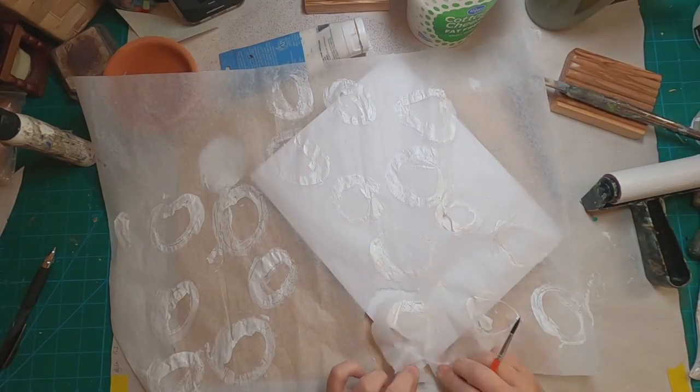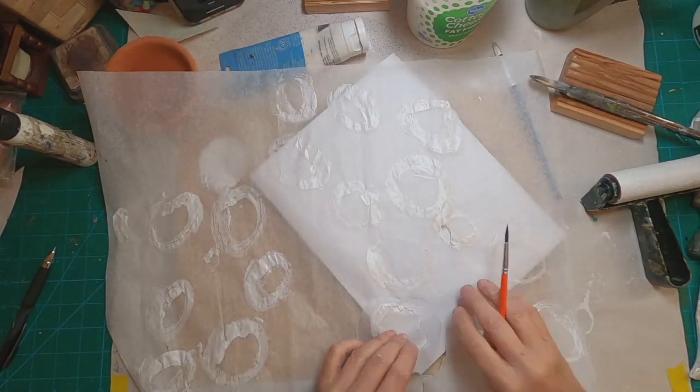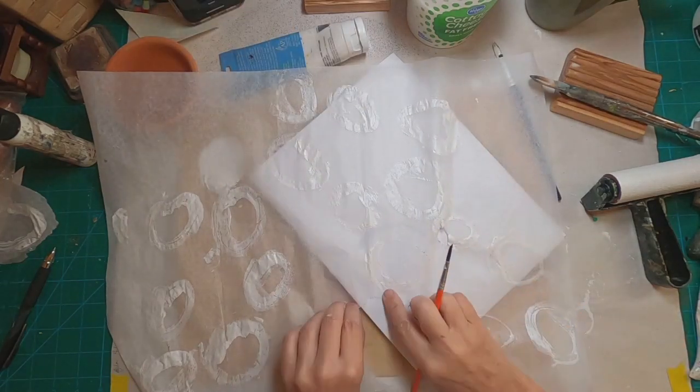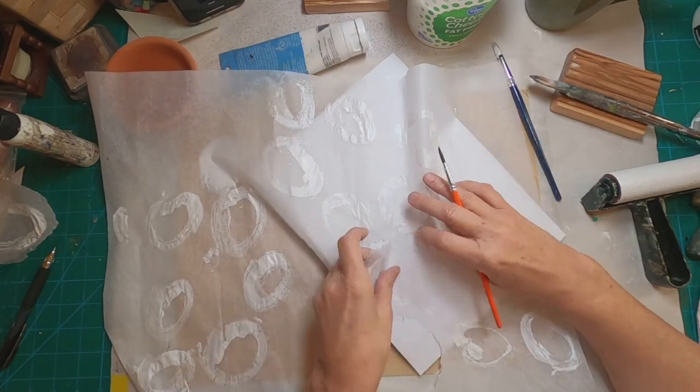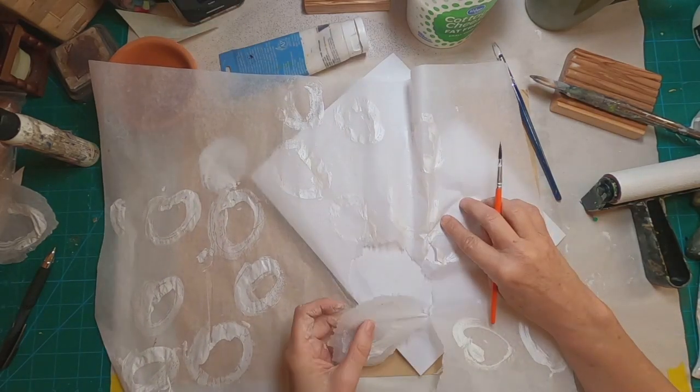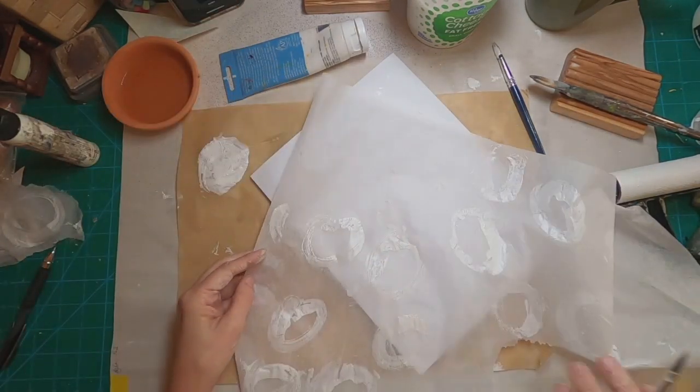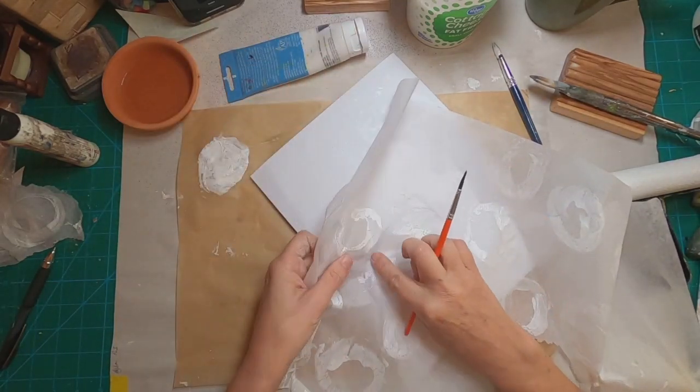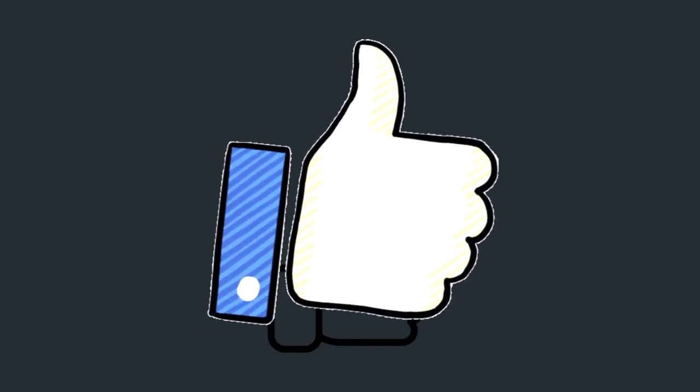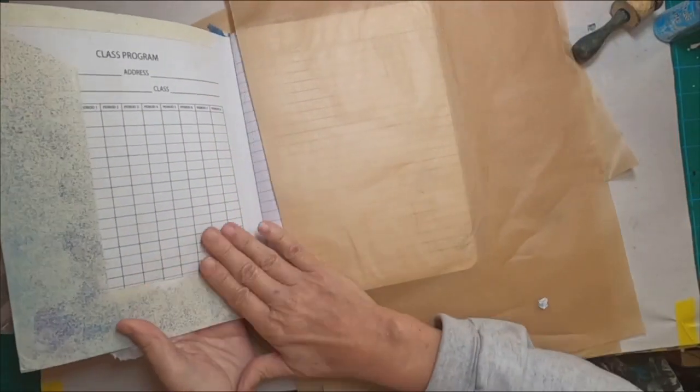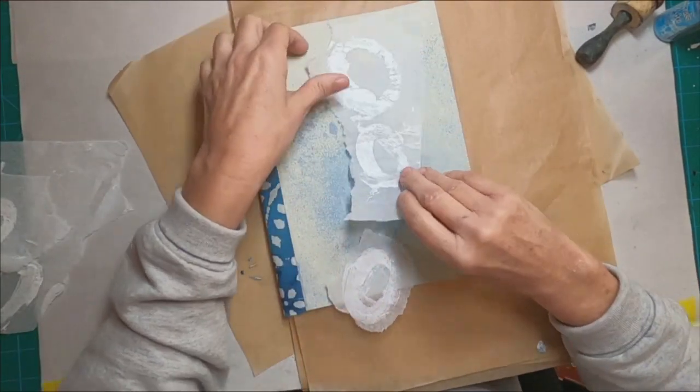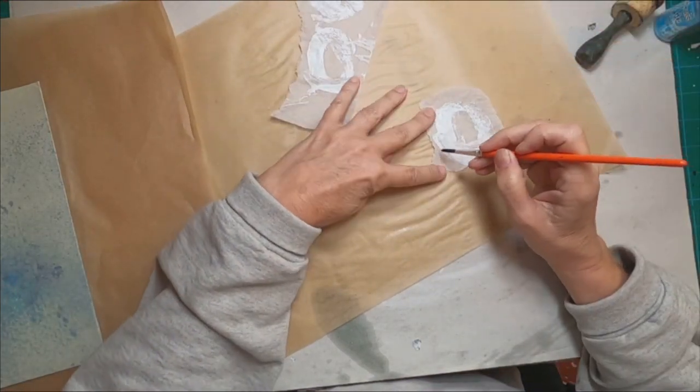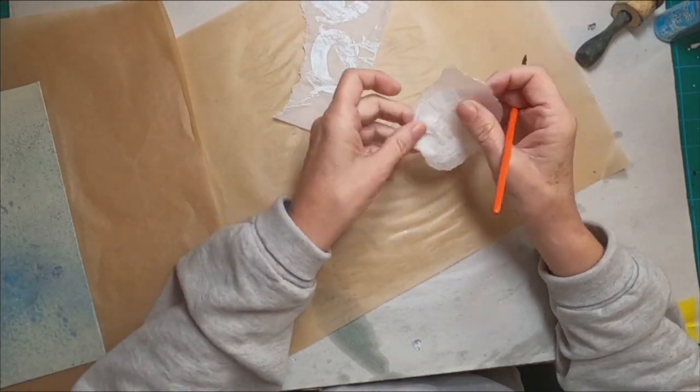Now that I have allowed that to dry, I'm coming back with some water on a clean paintbrush and just going around the outside edge of those circles so I can tear them out easily. By wetting that tissue paper, it just comes out very easily right in that circular shape. So if you've stuck with me this far, go ahead and give me that thumbs up. That does help my channel.